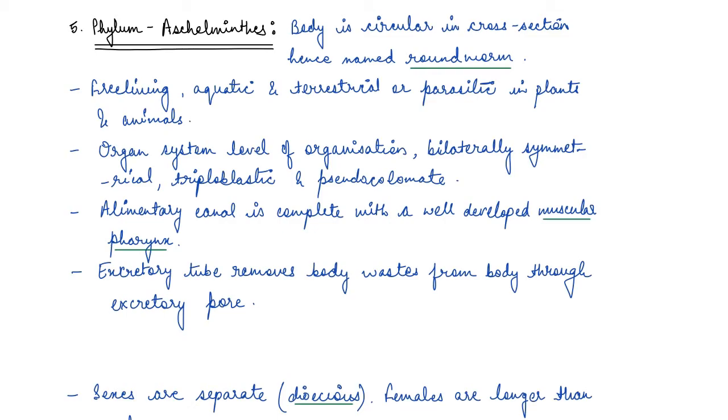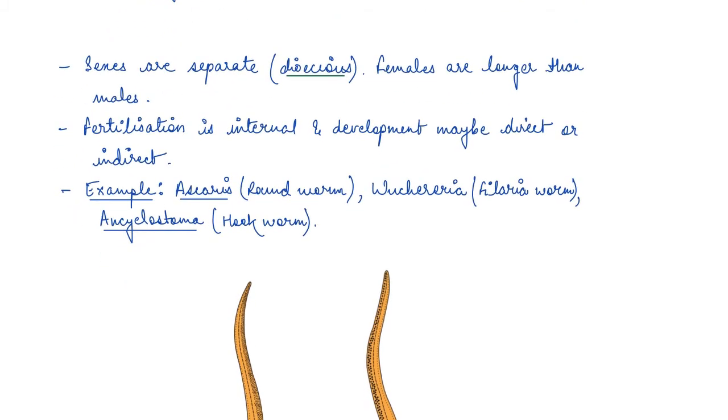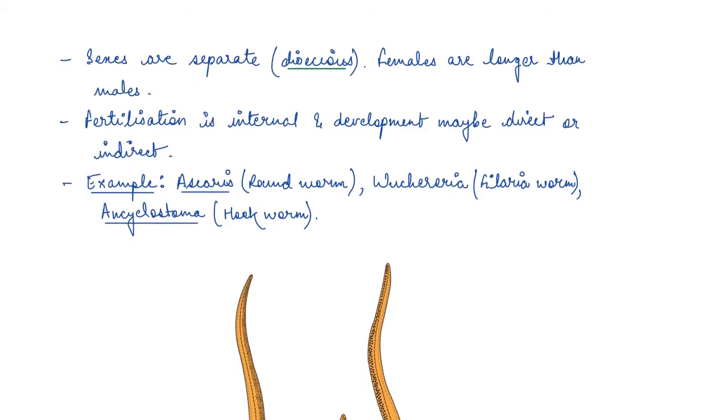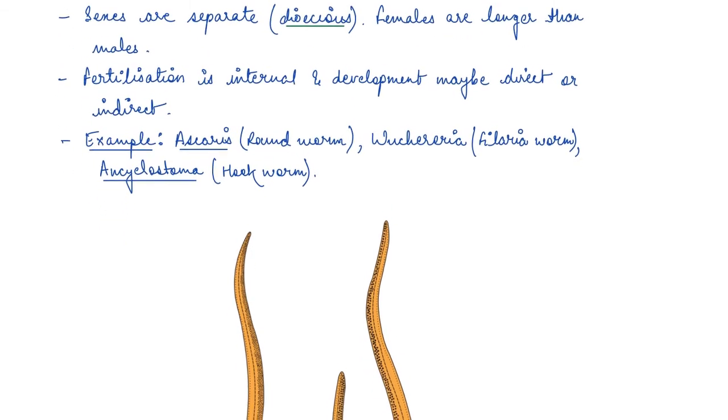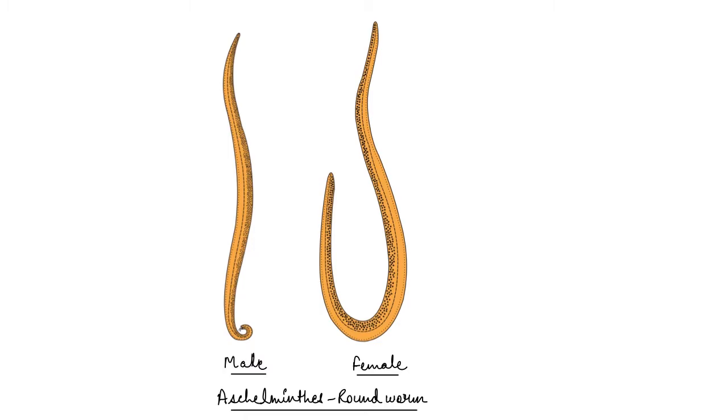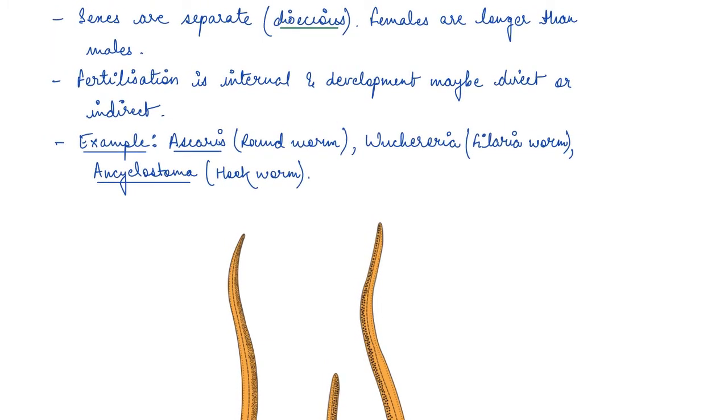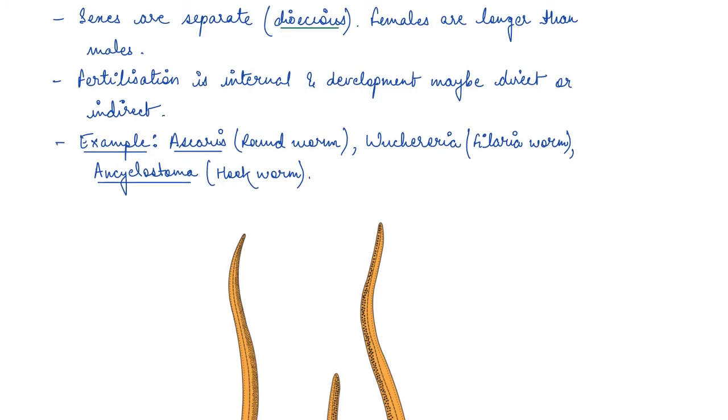Here sexes are separate. Till now we saw that the animals were hermaphrodite. Now here both the sexes, that is male and female, are separate and they are dioecious. Females are longer than males. If you see the diagram here of a female and a male roundworm, you see that the female is much longer than the male. Fertilization is internal - fertilization occurs inside the body of the female - and development may or may not be direct or indirect. It can be direct into an offspring or larval stage might be present.